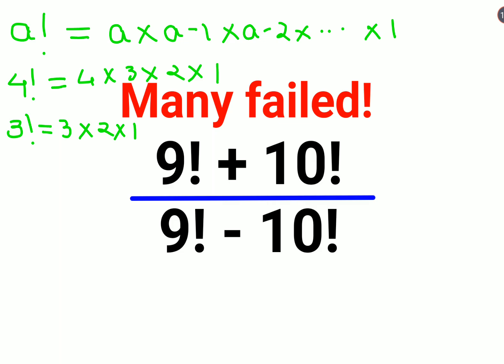Now if you look closely, this 3 into 2 into 1 and this over here is common. So instead of 4 factorial, I can also write this as 4 into 3 factorial.